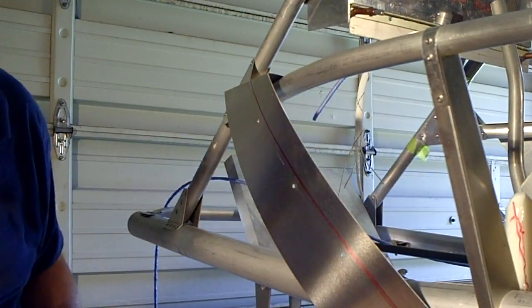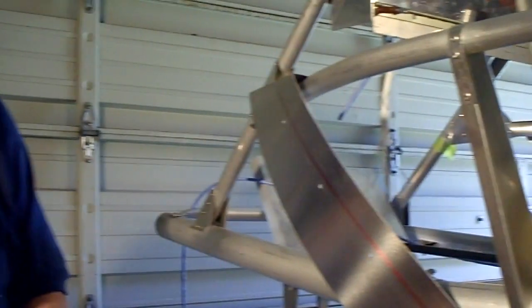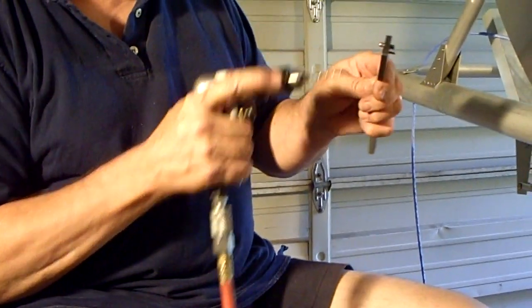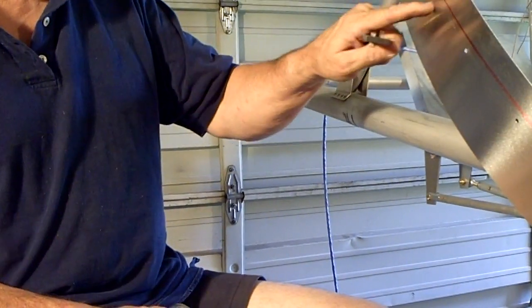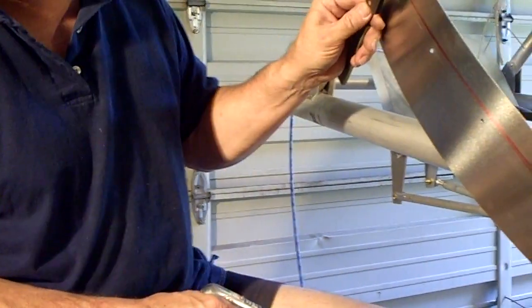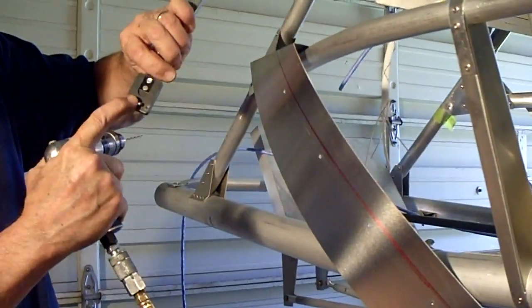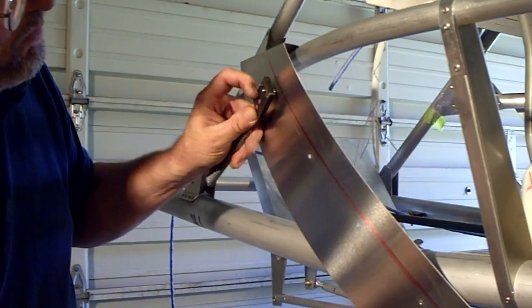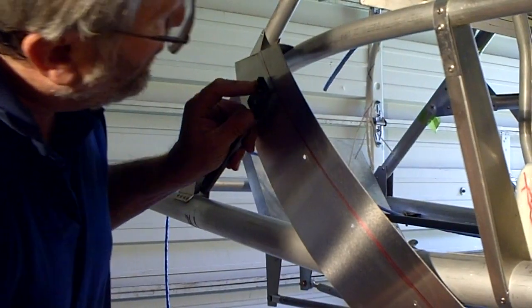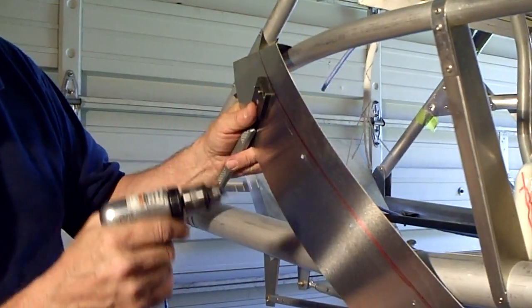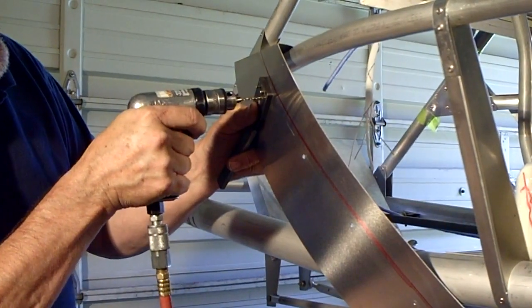But now I'm going to switch to a number 40 drill bit because that's the size of the hole for the rivet that's going to go in there to hold the nut plate onto the airframe, a number 40 drill bit. So take the side first that doesn't have the pin sticking through and we're going to put it on here and I'm going to go ahead and just drill through.